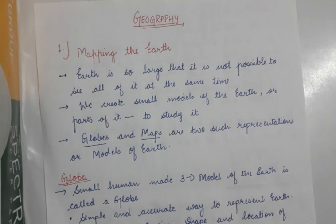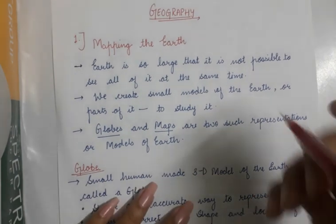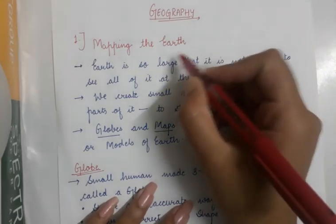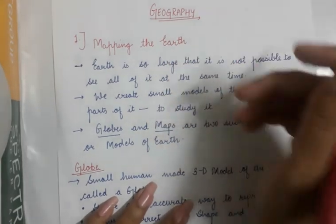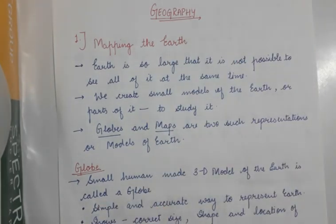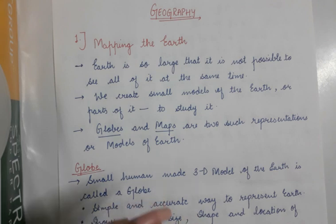Earth — you are all aware of what Earth is. In our solar system, Earth is a planet. It is the third planet and it is the only planet on which life exists. We live on planet Earth.